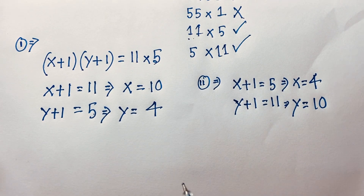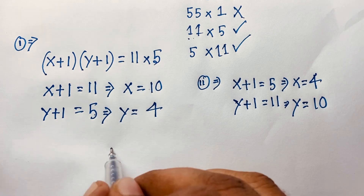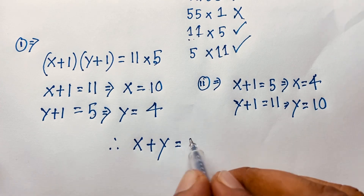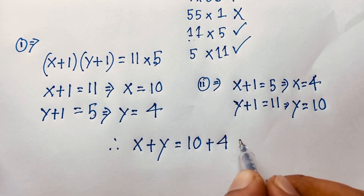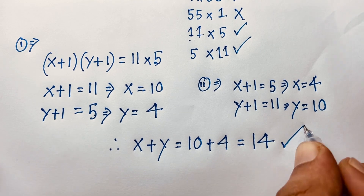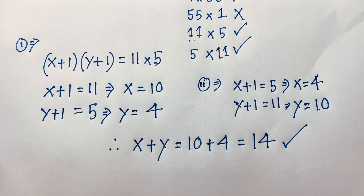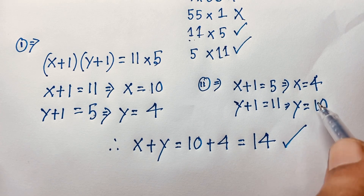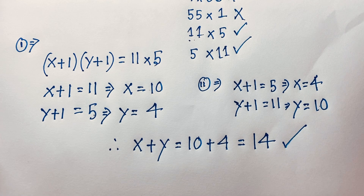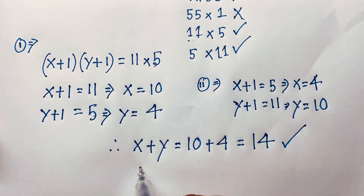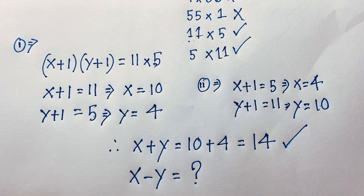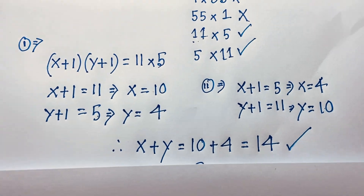Our target is x minus y. In both cases we can see that x plus y equals 14, since 10 plus 4 equals 14. So we find x plus y equals 14. But our actual question is x minus y, so we continue.